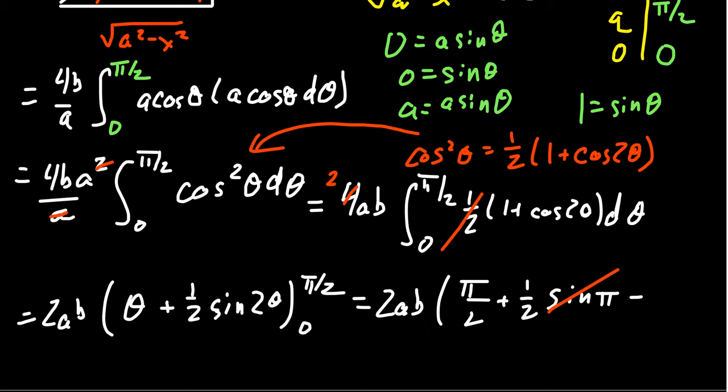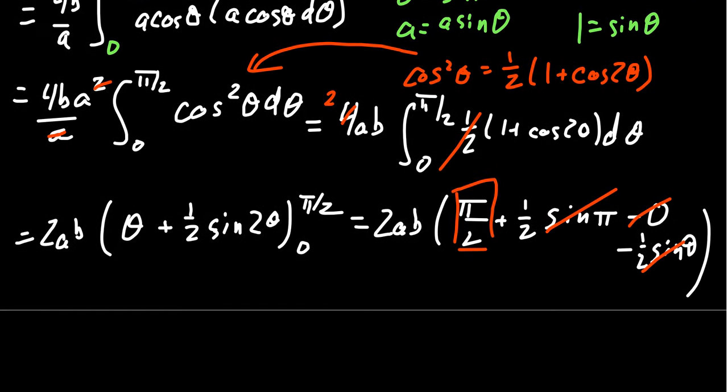Then we have to subtract when we plug in 0. We plug in 0 for theta, that's a 0. Then we subtract one half sine of 0. Sine of 0 is 0. So everything is going to disappear except for this pi halves. When you multiply that by the 2ab, that simplifies to give us our final result, which is pi ab.